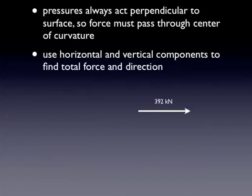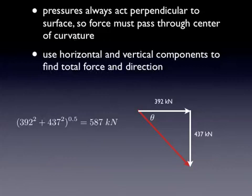So we've got one force acting in the x direction, one force acting in the vertical direction. Our resultant force is that red arrow which combines the two, and the angle at which it acts. So we can use basic trigonometry to solve this using Pythagorean's theorem and tangent, and we come up with a total force of 587 kilonewtons and an angle of 48 degrees.